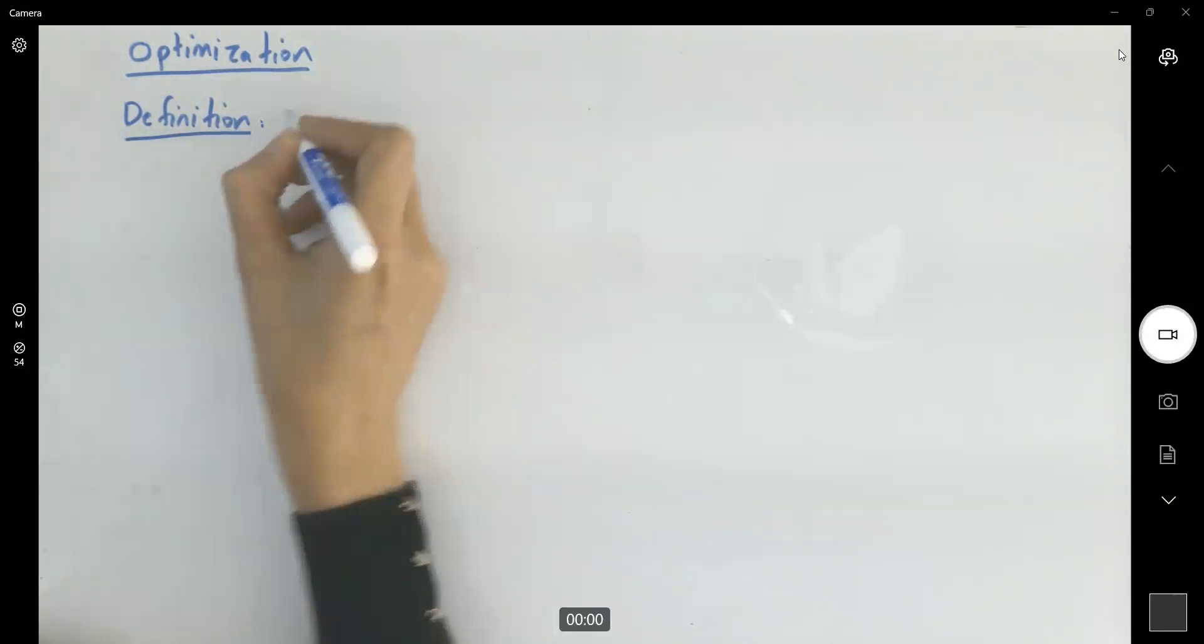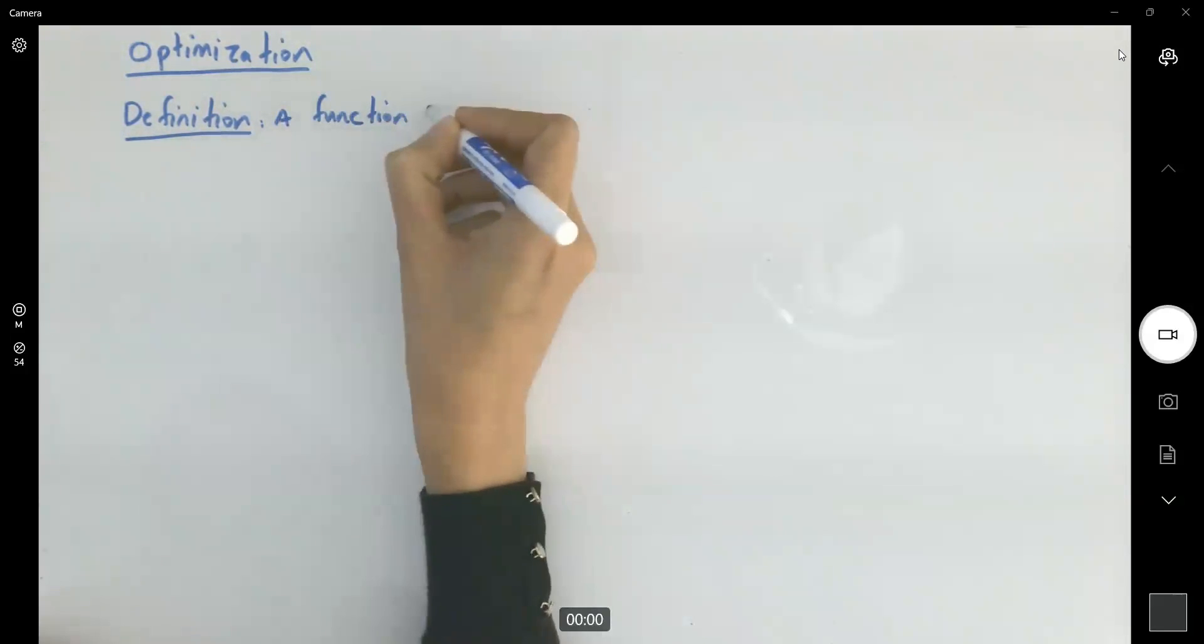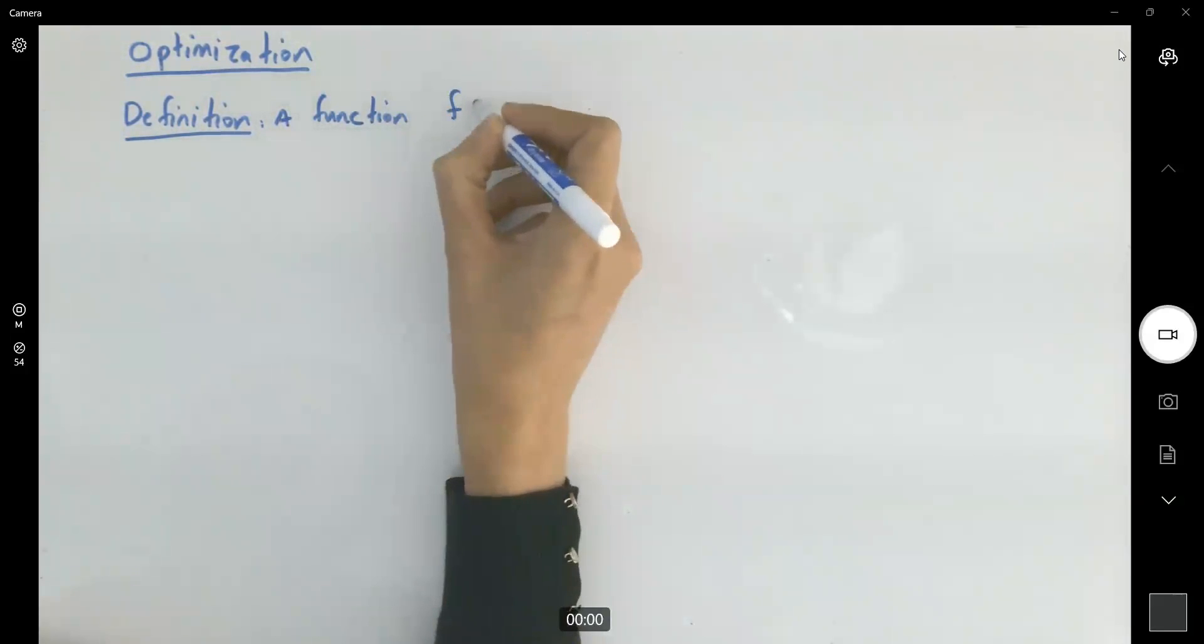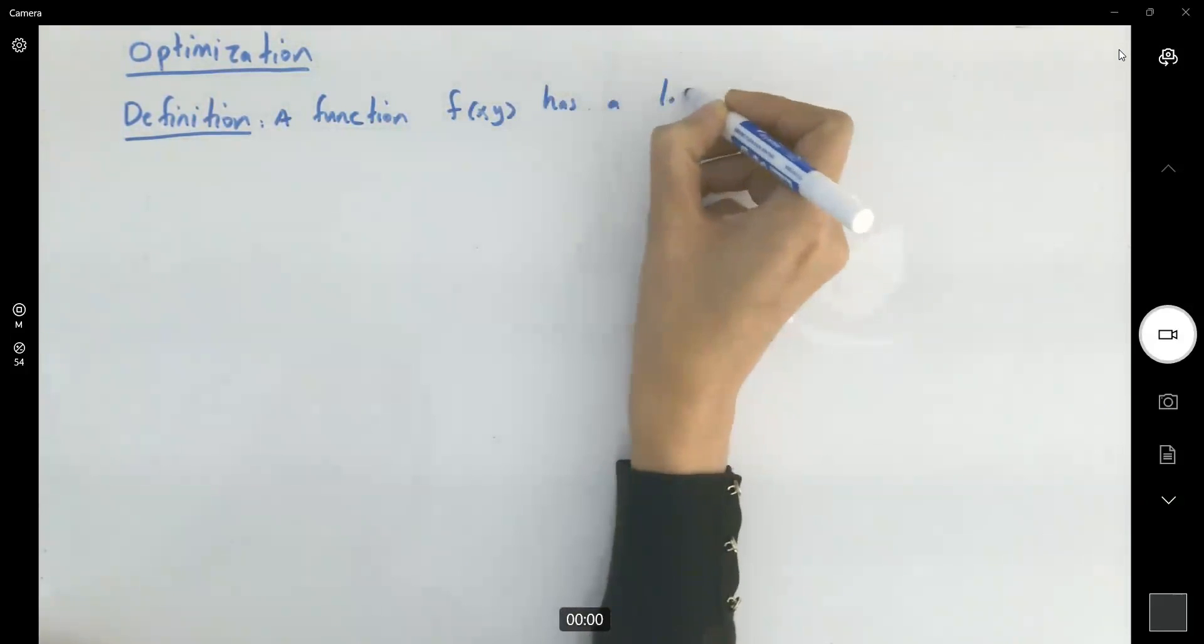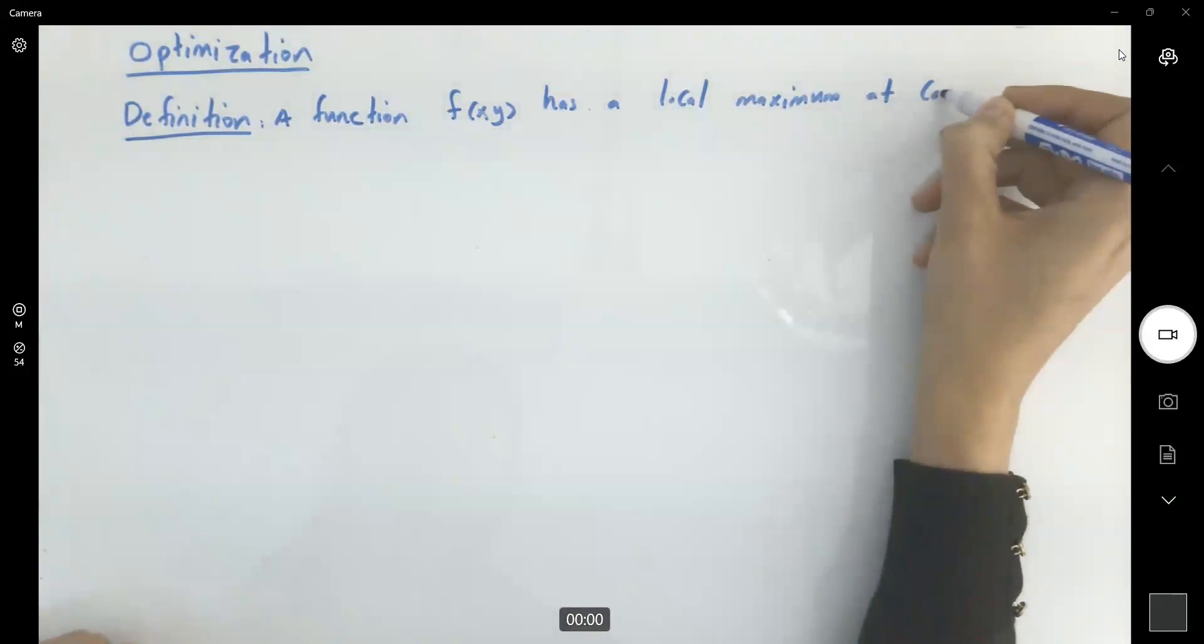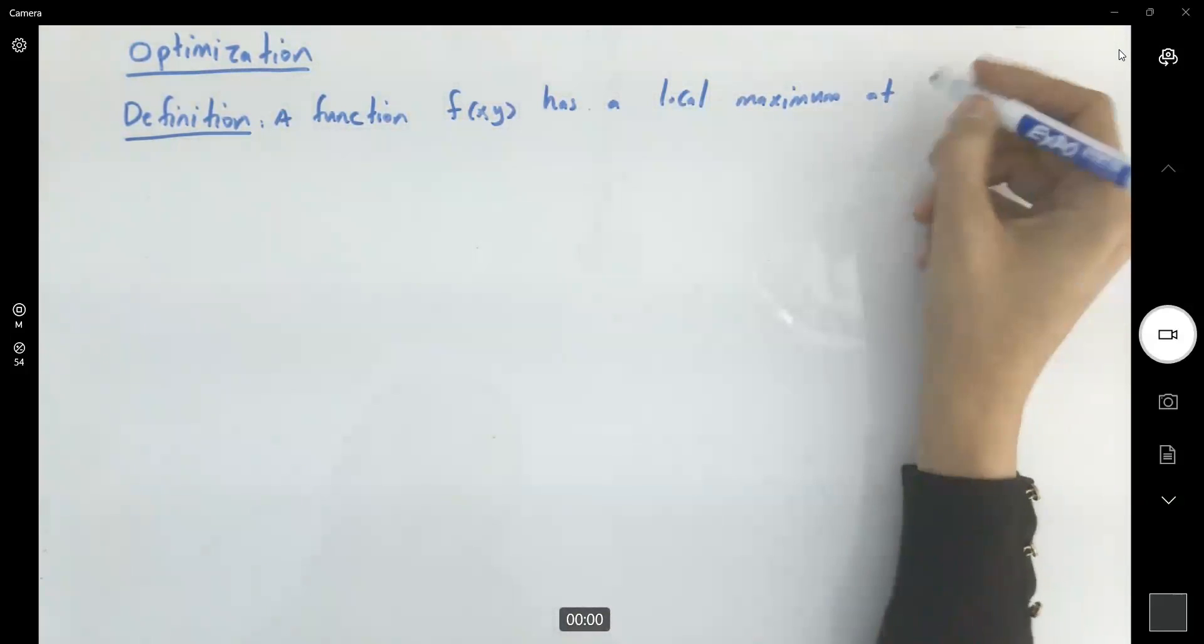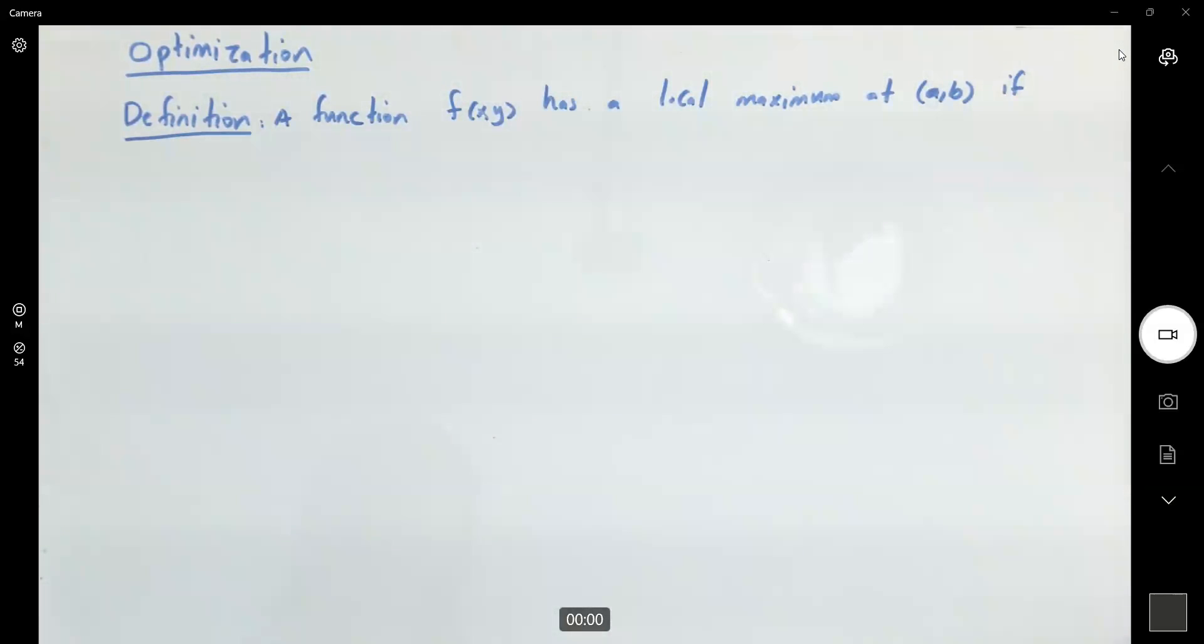A function f, to have a function like f, has a local maximum at a point like a and b, a comma b, if locally